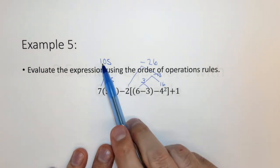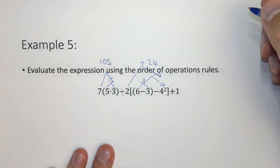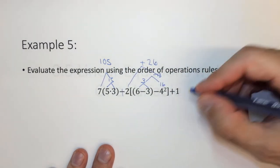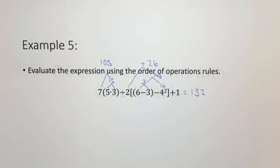Now we have 105 minus minus 26, which is the same as plus 26, which is 131, plus 1, which is 132. So this is kind of a culmination of the order of operations rules.